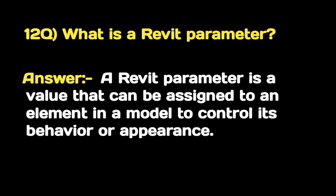What is a Revit parameter? A Revit parameter is a value that can be assigned to an element in a model to control its behavior or appearance.